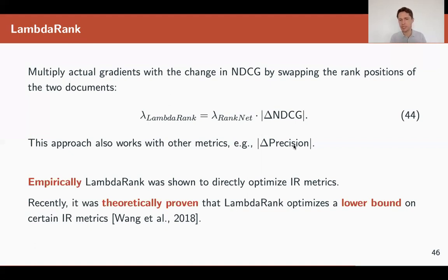And recently, there was even some theoretical proof that LambdaRank optimizes some lower bounds on certain metrics. Well, importantly, we know that empirically, this approach really optimized these metrics that are used here instead of costs.